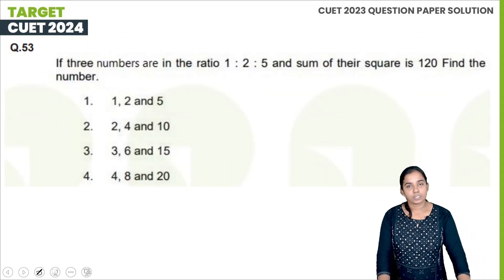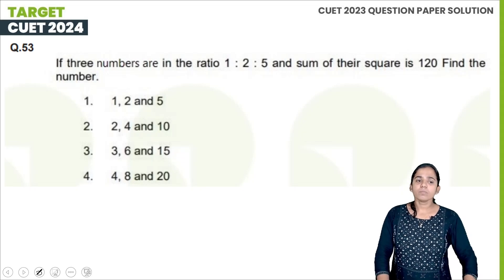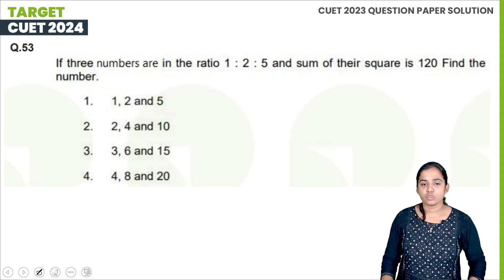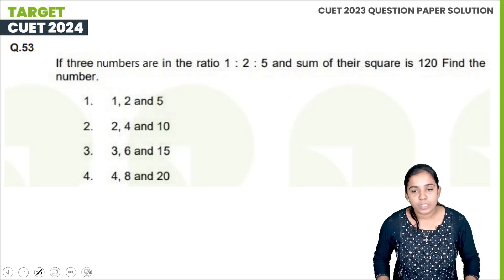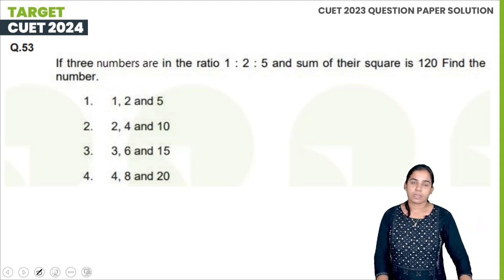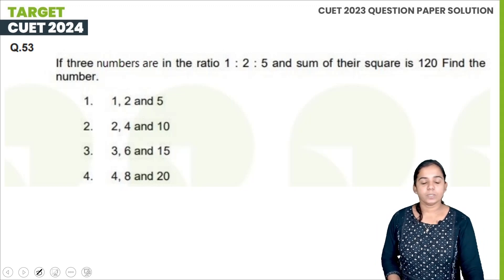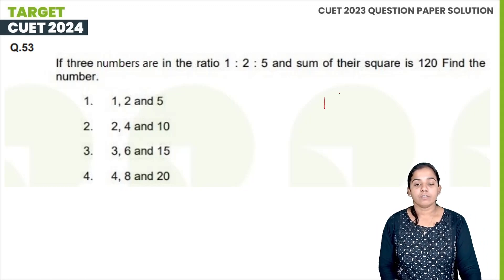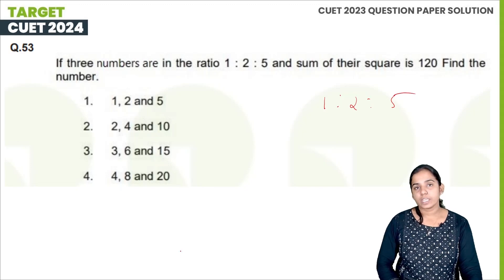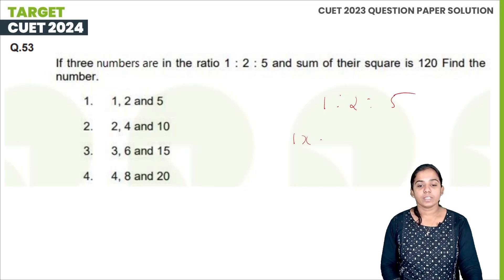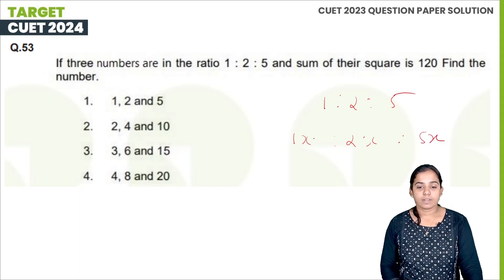Next question: If three numbers are in the ratio 1:2:5 and the sum of their squares is 120, find the numbers. Let the numbers be 1x, 2x, and 5x. So: 1x² + 2x² + 5x² = 120, which gives 30x² = 120.